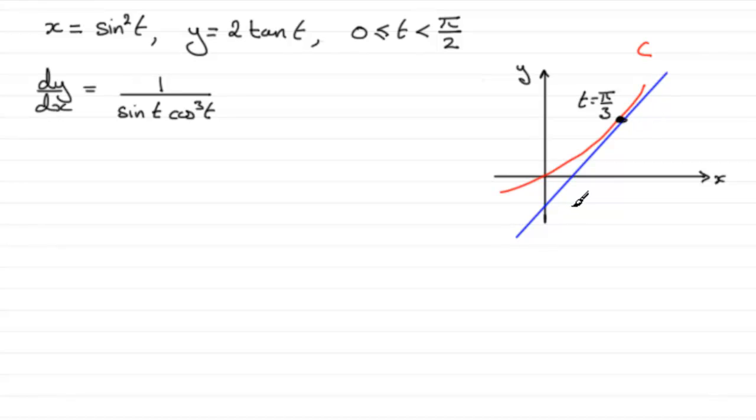And we're told that this tangent crosses the x-axis at this point here, P, and we've got to find the x-coordinate at this point. So how are we going to do this?